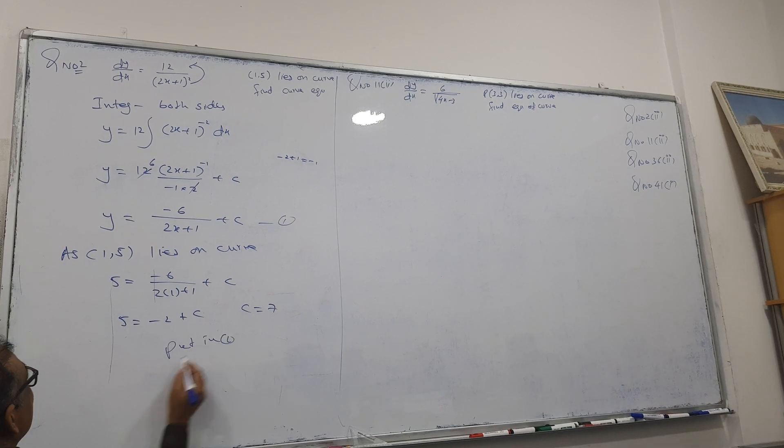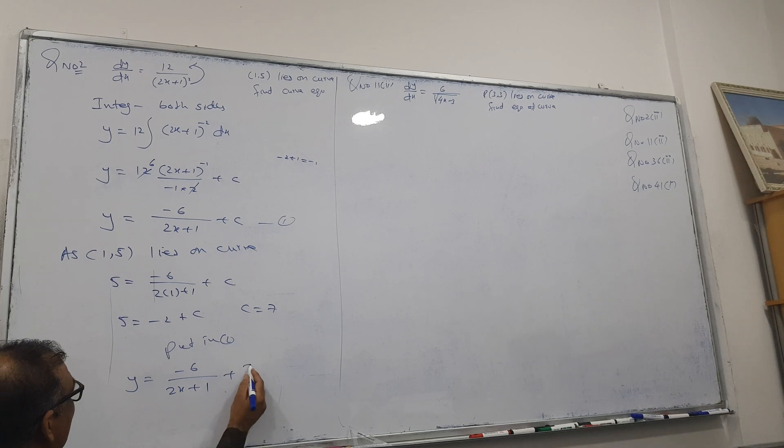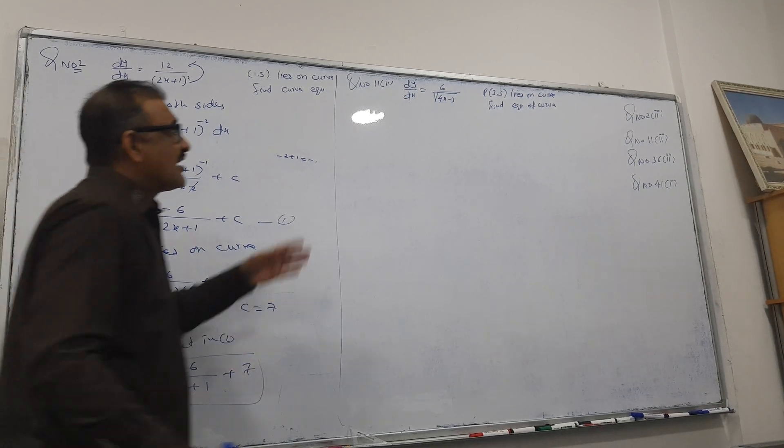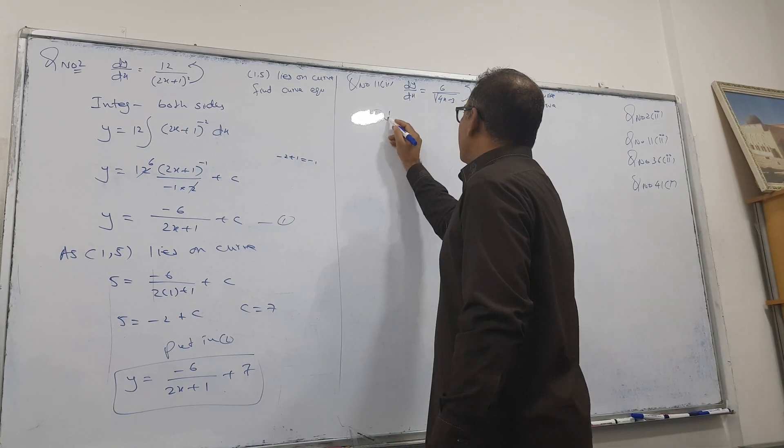And put back in question number 1, and my answer is done. So minus 6 over 2x plus 1, plus 7. Where is the conclusion? Clear? Come on, this question. So first bring it up, integrate both sides.